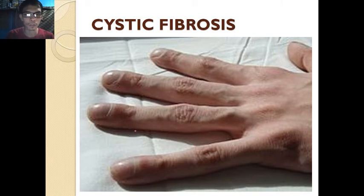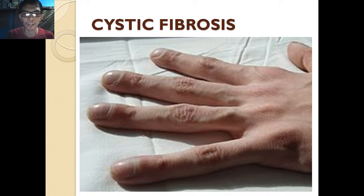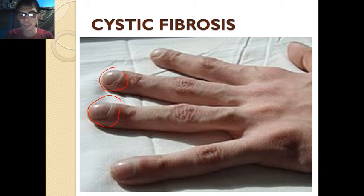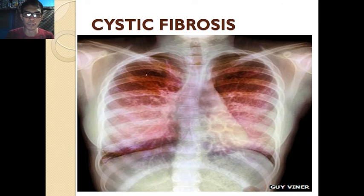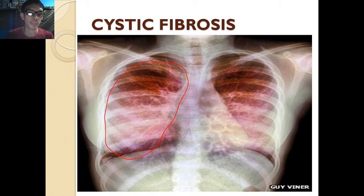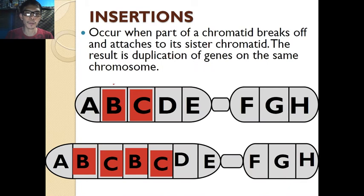Another example of deletion is cystic fibrosis — the abnormal accumulation of mucus in the lungs. Because of errors in the DNA sequence, there is an uncontrollable amount of mucus formed in the lungs. Effects include bulging fingers, and eventually one of the major effects is death.